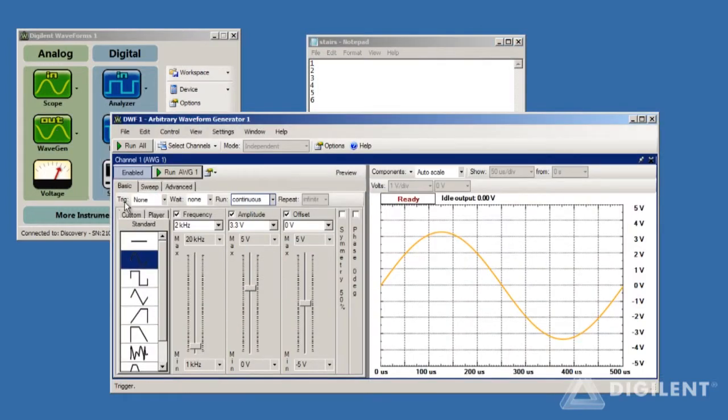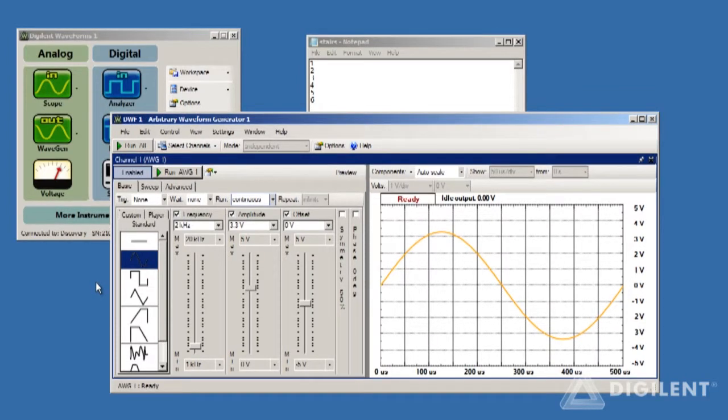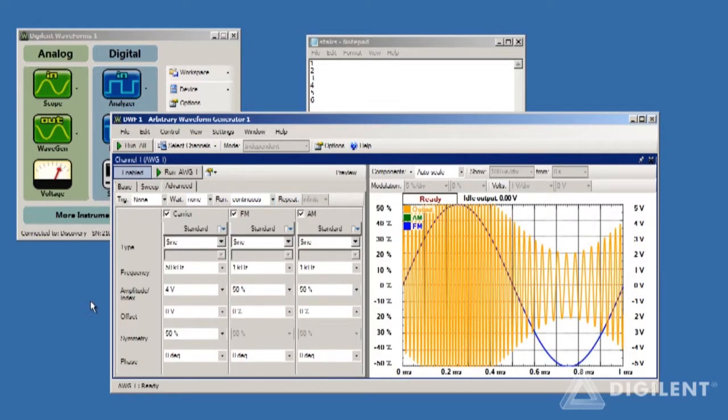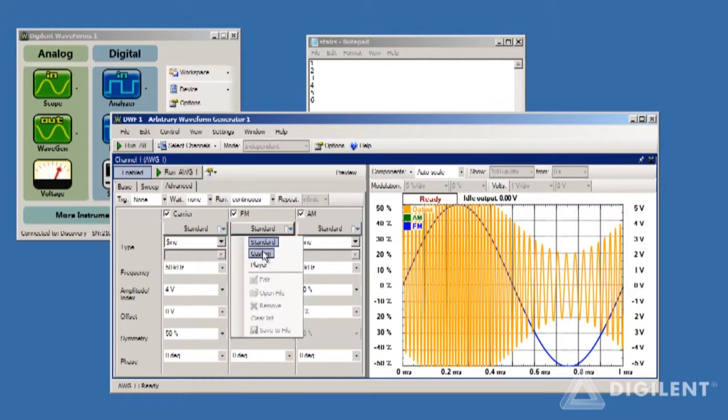We've already imported WAV files into the function generator. Importing text and .csv files is very similar. Since we want to use this stair step-like data as a baseband signal for frequency modulation, click on the Advanced tab to get to the FM signal options. Click on the Signal Selection button in the FM column. Importing data is a custom option, so click on Custom, then click on Open File.